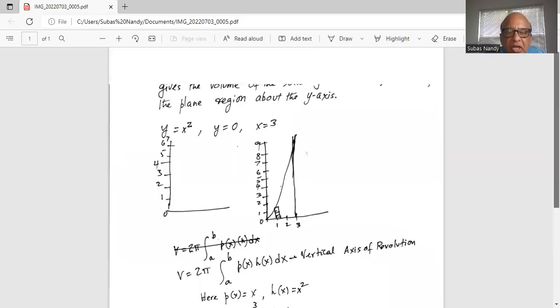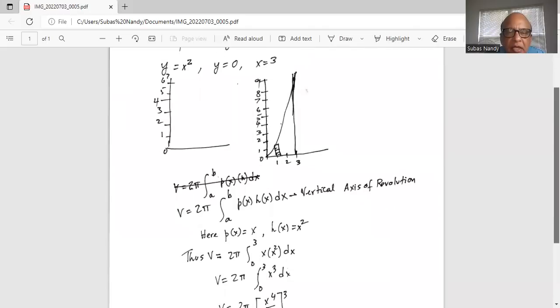Volume by the shell method is given as 2π, limits of integration between a and b, p(x) times h(x) dx, when we rotate about the vertical axis.